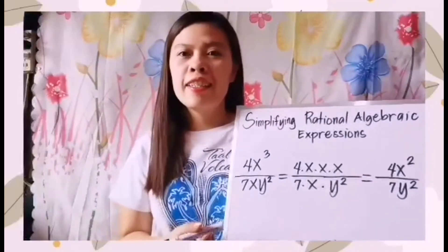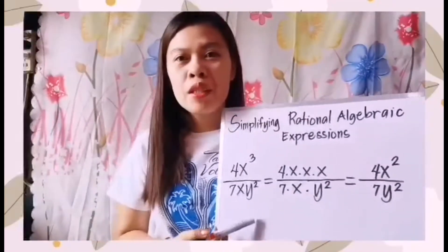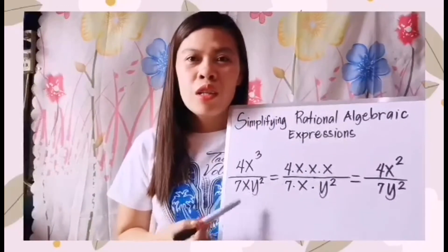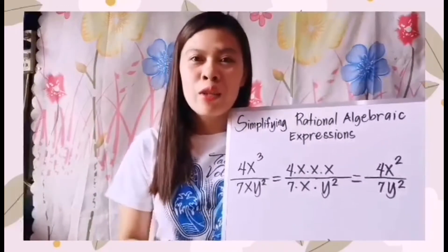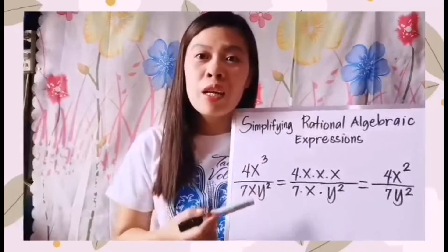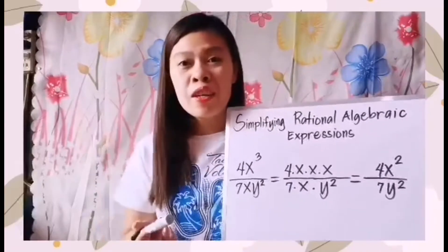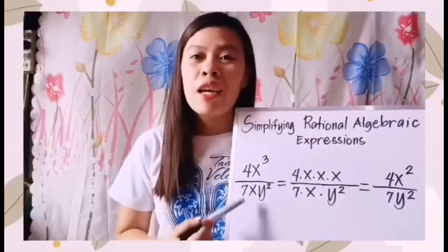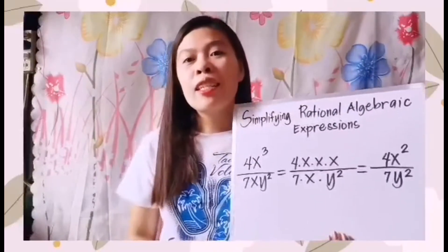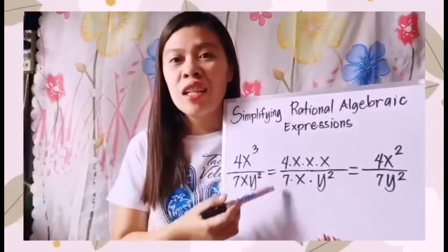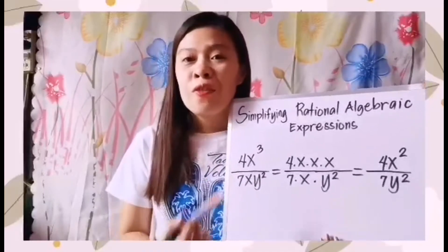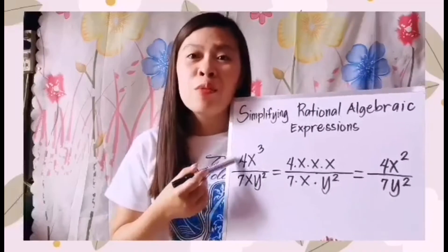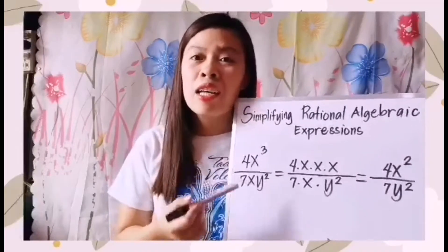Moving to our second example: 4x cubed over 7xy squared — polynomial over polynomial, or specifically monomial over monomial. Let us simplify this rational algebraic expression. First, we have to simplify further the numerator and the denominator.